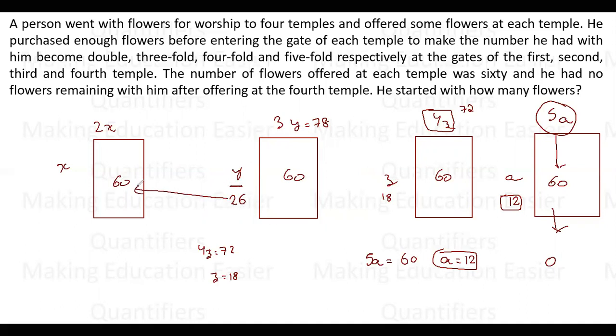Now the sequence is very simple. This 26 is left after devoting 60 at the first one, which means you have to get 86. So 2x is equal to 86, so he must have started with 43 flowers. This is our answer.